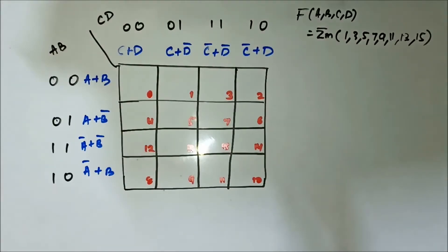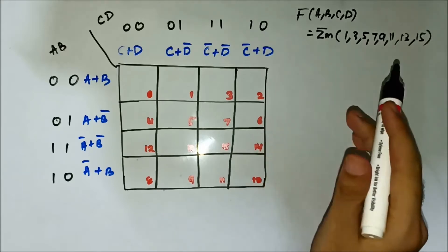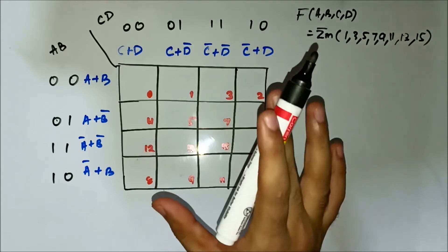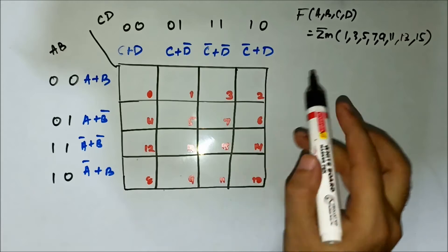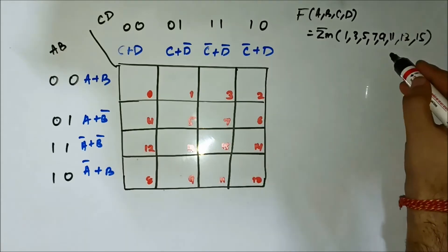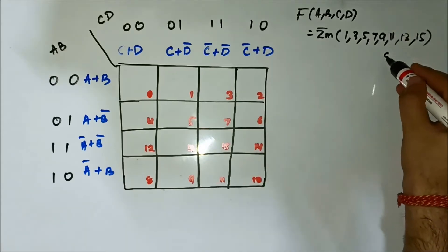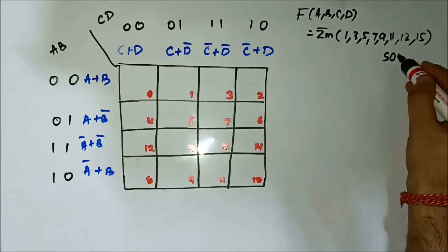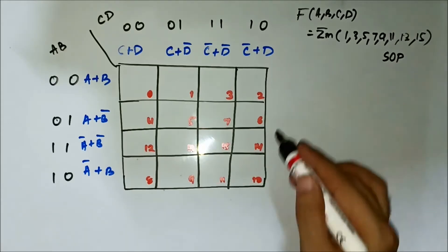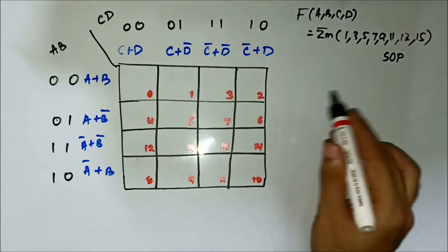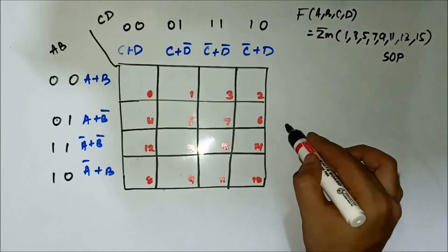Hello friends. So far we have discussed the implementation of SOP expressions using POS KMAP for three-variable expressions. So here we will be doing the same for four-variable expressions.